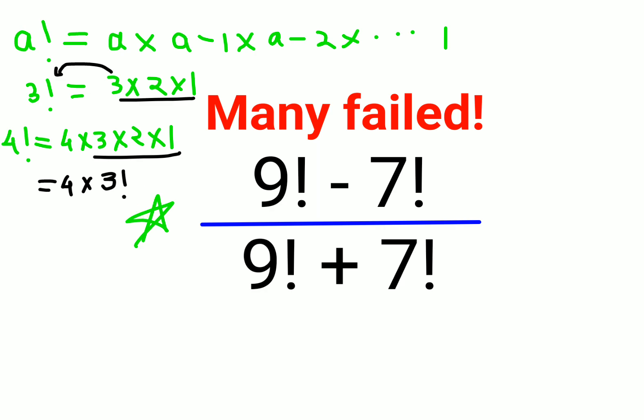Similarly, if you look over here, 9 factorial can be written as 9 times 8 times 7 factorial, correct. And here we will keep the 7 factorial as it is. Here also we will have 9 times 8 times 7 factorial plus 7 factorial.